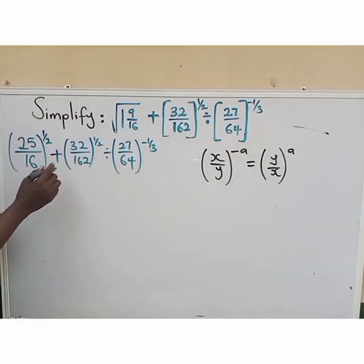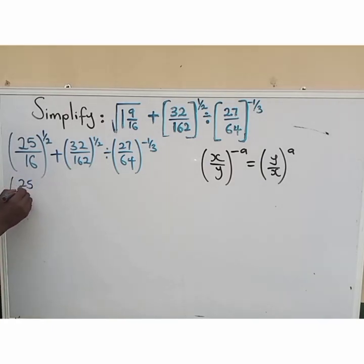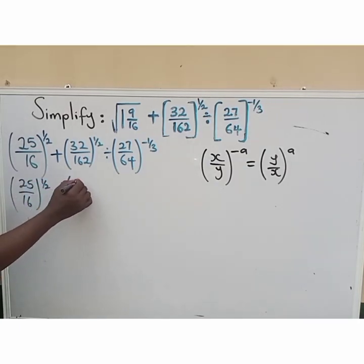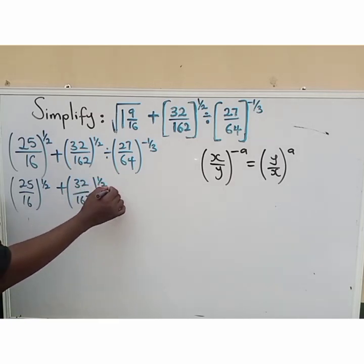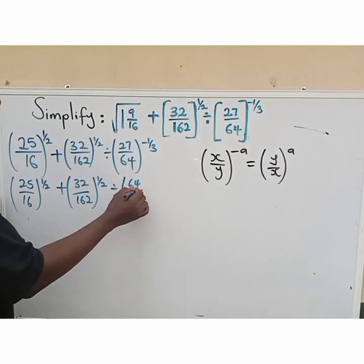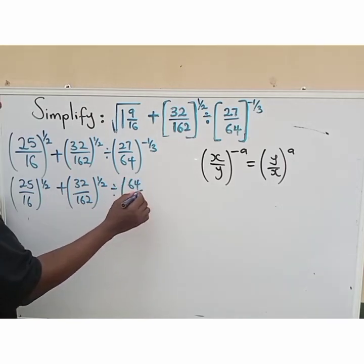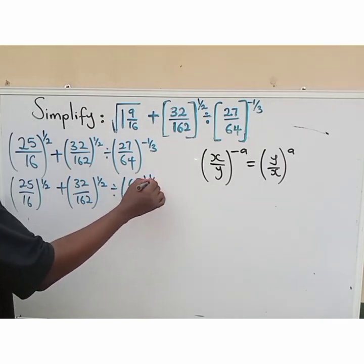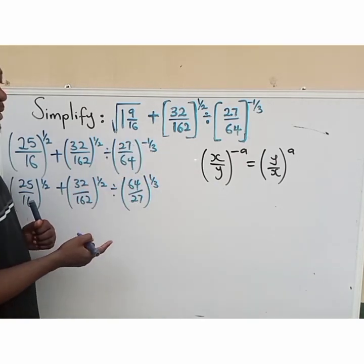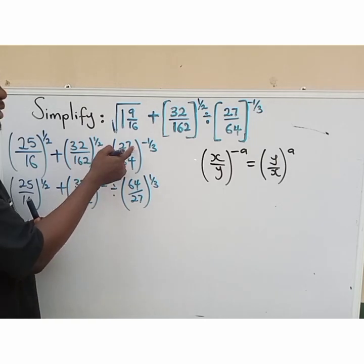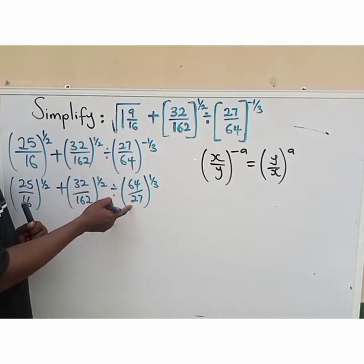The same rule is applicable here. So we are going to have (25 all over 16) raised to the power of 1 over 2, plus (32 all over 162) raised to the power of 1 over 2, divided by (64 all over 27) raised to the power of 1 all over 3. The negative sign has changed to positive, but the implication is that 27 over 64 changes to its reciprocal — that is 64 all over 27.